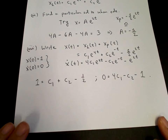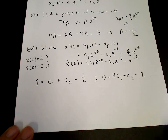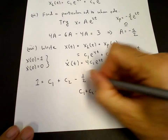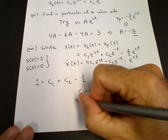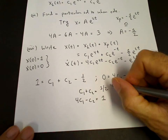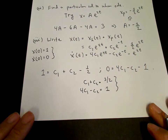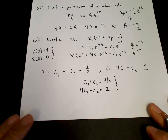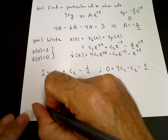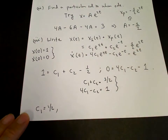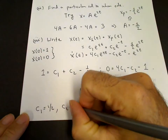Those are our two equations for c1 and c2. Cleaning them up: c1 plus c2 equals 3 halves, and 4c1 minus c2 equals 1. Adding the two equations, c2 cancels: 5c1 equals 3 halves plus 1 equals 5 halves, so c1 equals 1 half. From the first equation, c2 equals 3 halves minus 1 half equals 1. So c2 equals 1.